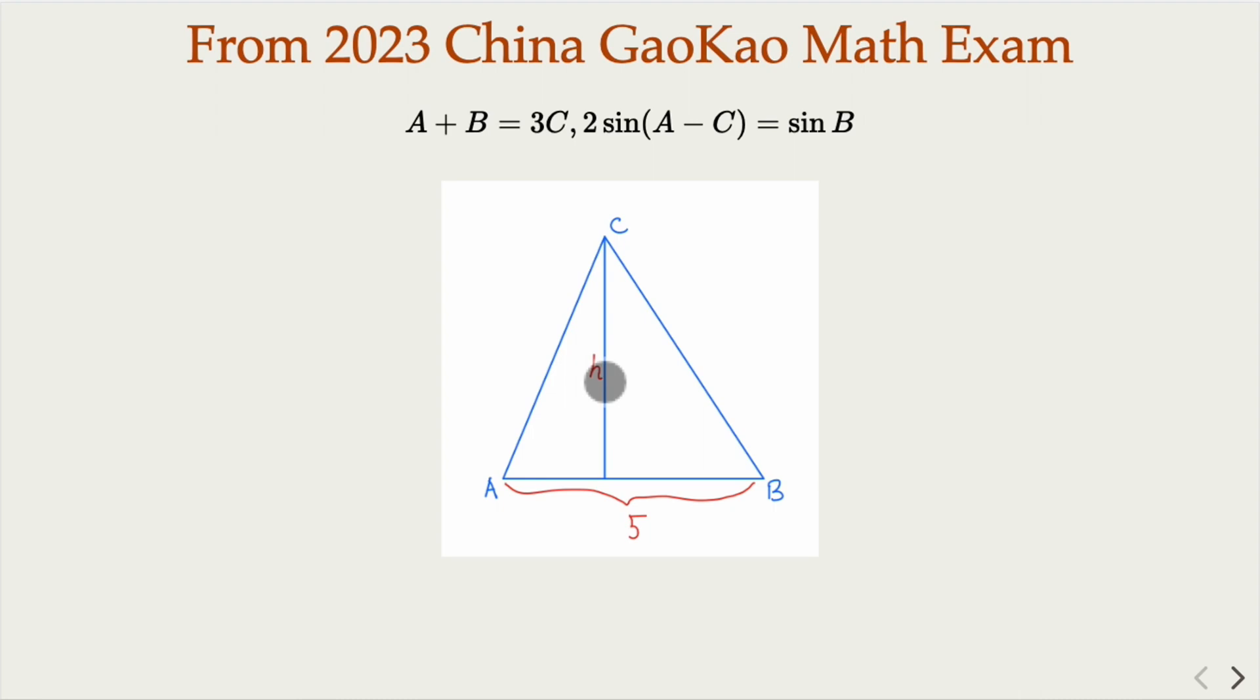I have seen people trying to solve this problem by using law of sine or law of cosine and things like that. But here, in my opinion, the straightforward approach is to consider tangent instead. Why? Because this is how h and the base can be related.